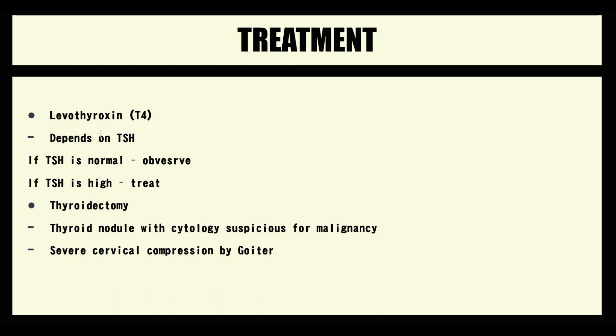The major medication in treatment of Hashimoto thyroiditis is levothyroxine, to correct hypothyroidism. The principle is simple: check TSH level — if within normal values, observe; if TSH is high, begin treatment. In cases of severe goiter with complications, thyroidectomy is an option.